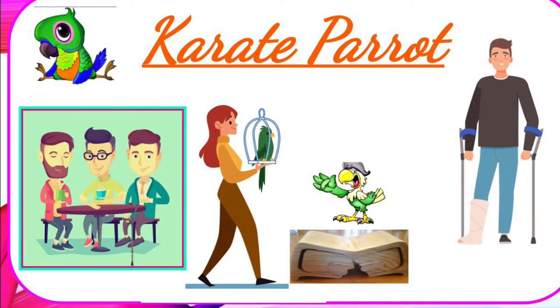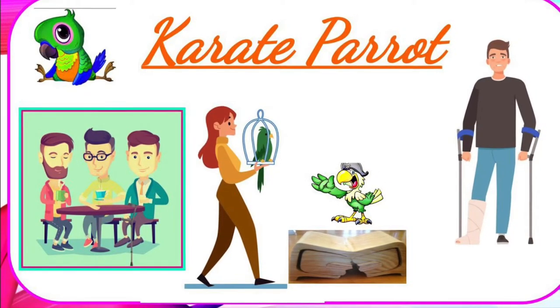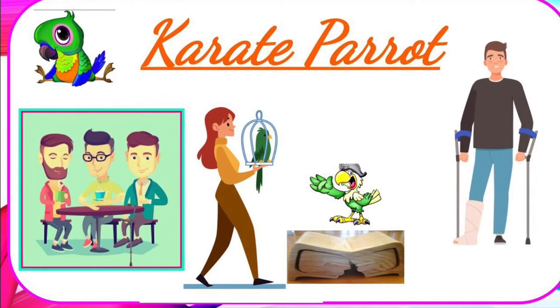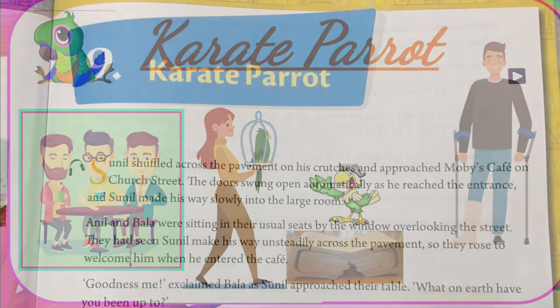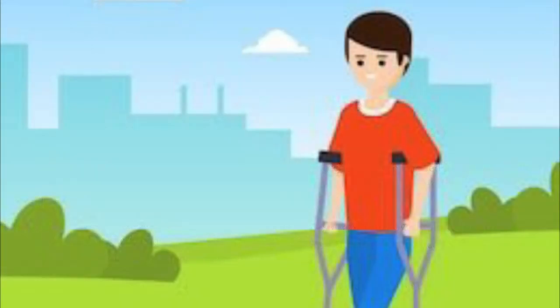Hello students, today I am going to explain chapter 9 from your English literature book, that is 'Karate Parrot'. If you want to enjoy the story, open your book at page number 109 and read along with me so that you can understand better. Okay, let us start.